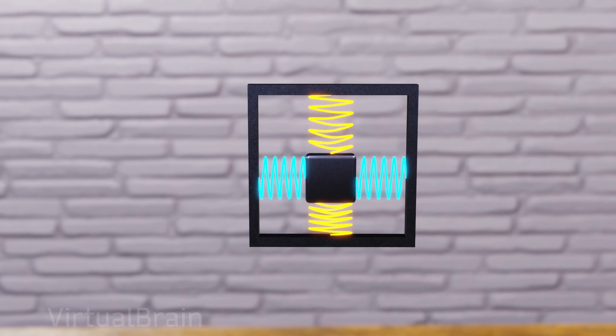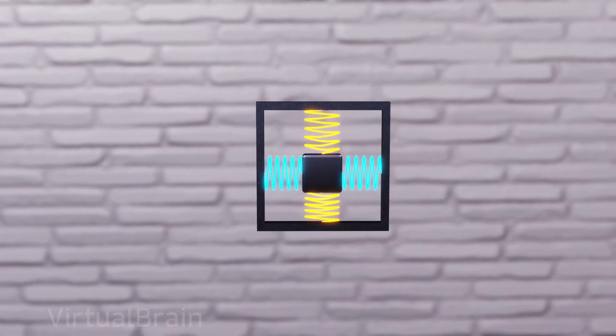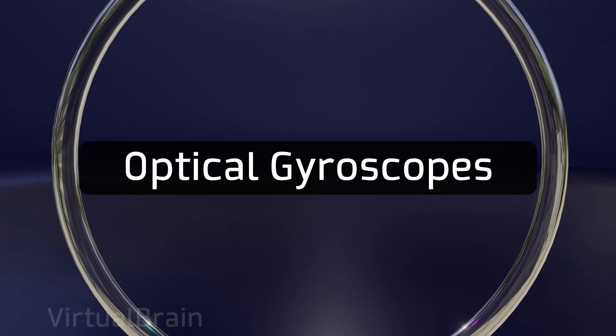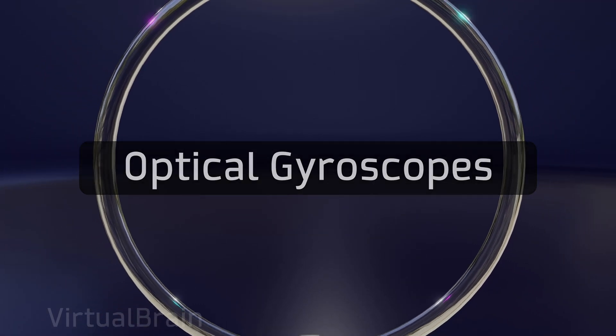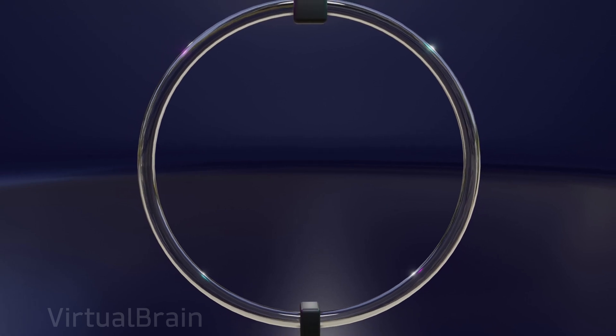But fortunately, this is where the third type of gyroscope we will discuss comes in: optical gyroscopes, which can detect angular velocities completely independently of the linear accelerations of the system.